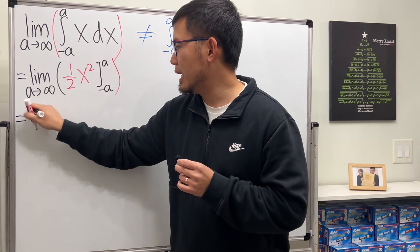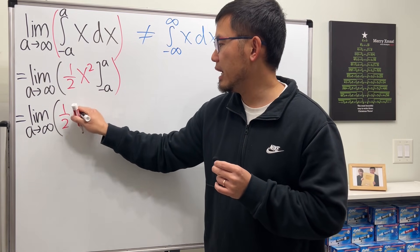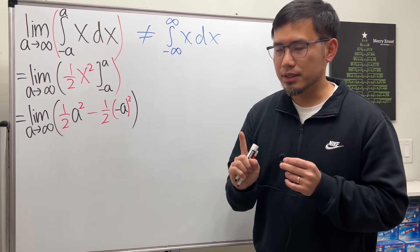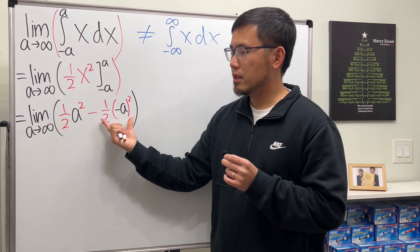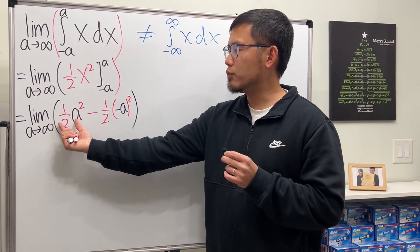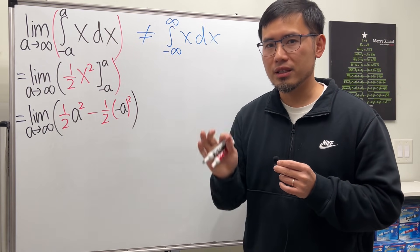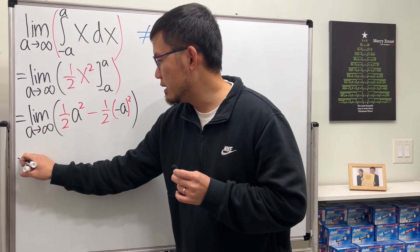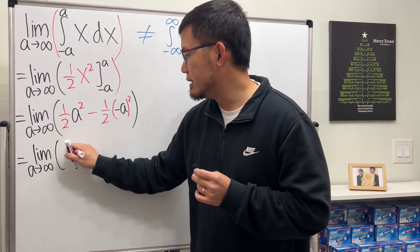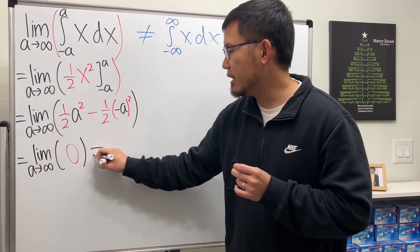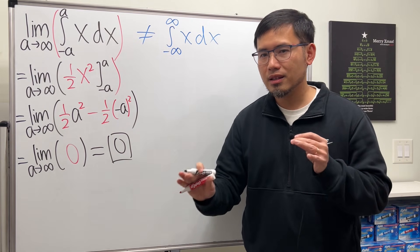Putting the numbers in: we have the limit as a goes to infinity. This is just one half a squared minus one half a squared, which equals zero inside. So we're asking what is the limit as a approaches infinity of zero, and that is equal to zero.